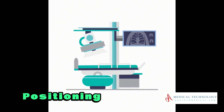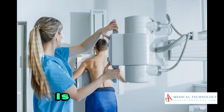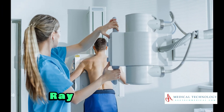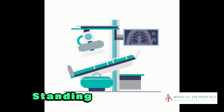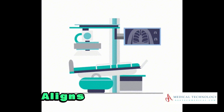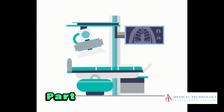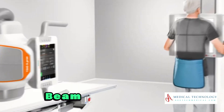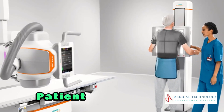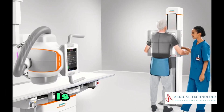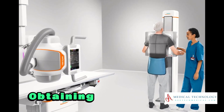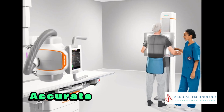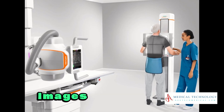Patient positioning. The patient is positioned on an X-ray table or standing device in a way that aligns the body part to be imaged with the X-ray beam. Proper patient positioning is essential for obtaining accurate diagnostic images.